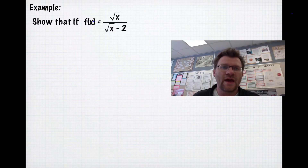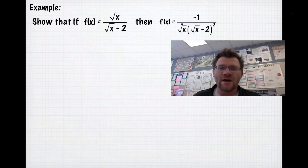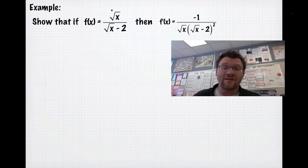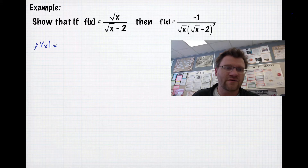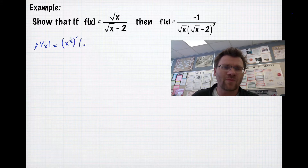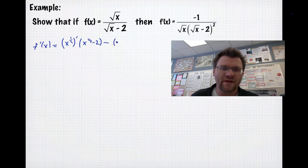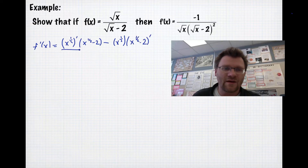Here's our last example: show that if f of x equals root x divided by root x minus 2, then f prime x is negative 1 divided by root x times root x minus 2 squared. We're just asked to confirm that f prime x is the derivative of f of x by taking the derivative and showing it equals the given expression. So f prime x is the derivative of the top — I'll rewrite root x as x to the half prime — multiplied by the bottom, x to the half minus 2, minus the top x to the half, multiplied by the derivative of x to the half minus 2, all over x to the half minus 2 squared.